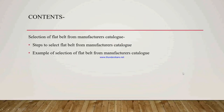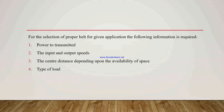In this section, we are going to see the selection procedure for the flat belt drive from manufacturer's catalog and one simple example related to how to select the flat belt from manufacturer's catalog. For selection of proper belt for the given application, some information is required such as the power to be transmitted, the input and output speeds, and the center distance depending upon the availability of space between two pulleys, and which type of load is applied on the belt.